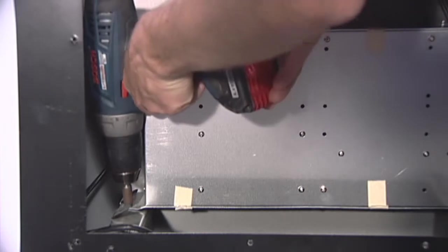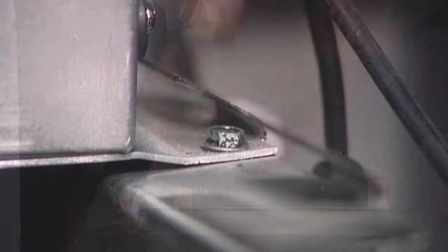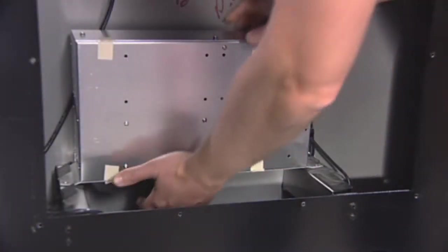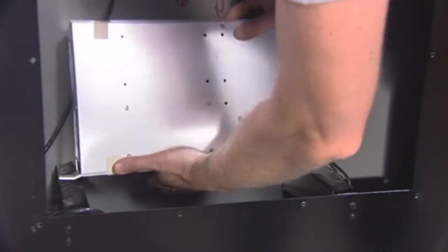Use the cordless drill and quarter-inch nut driver to remove the screws holding the module to the cabinet. Slide the module along the guide rails to remove the module from the cabinet.